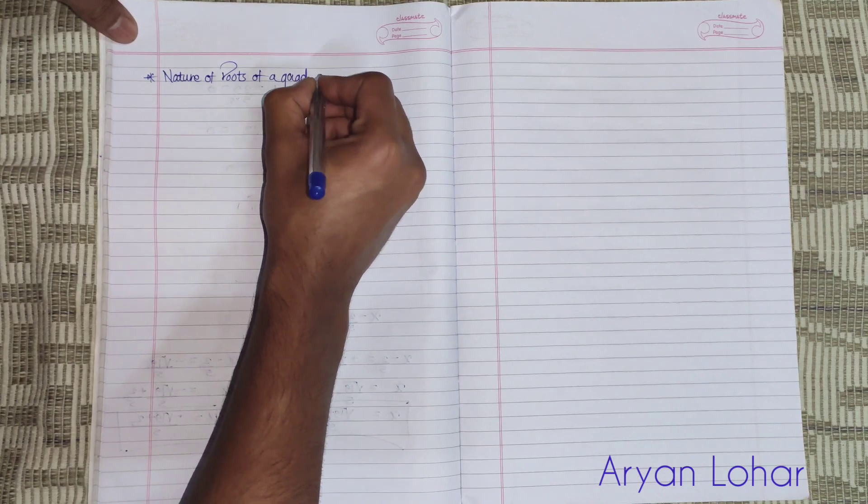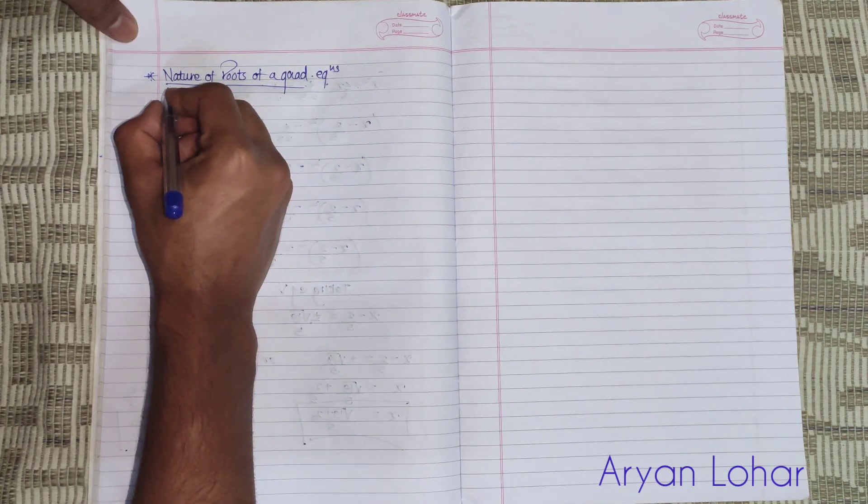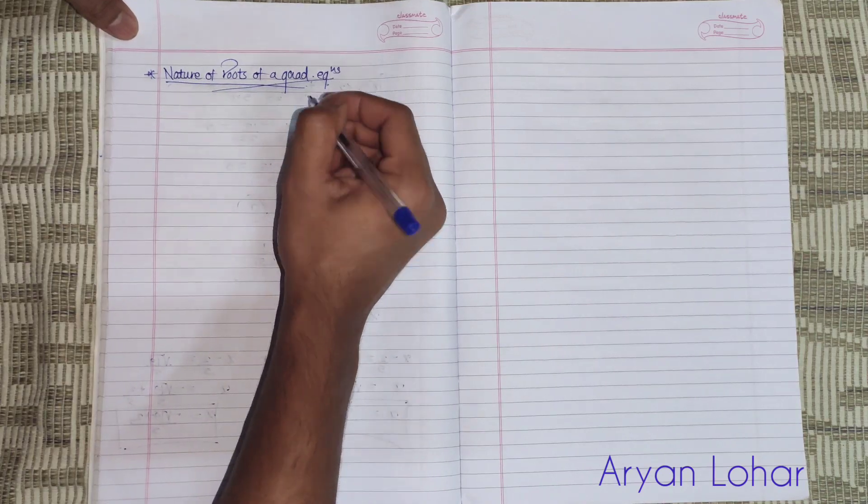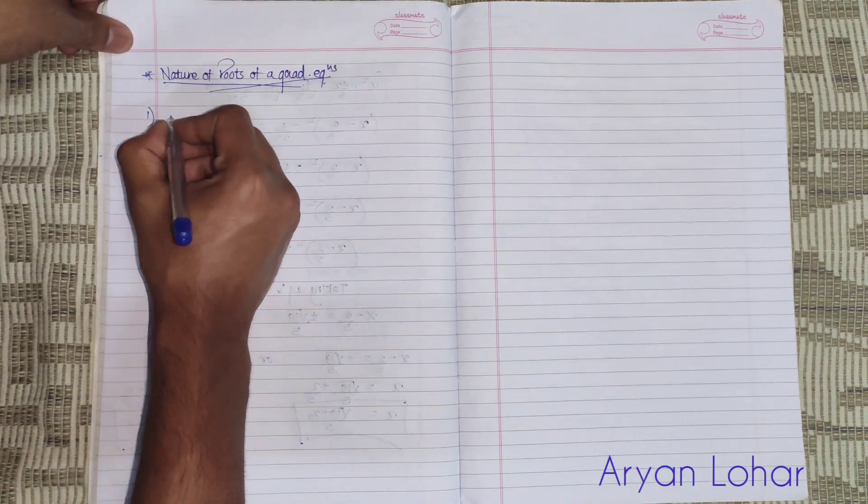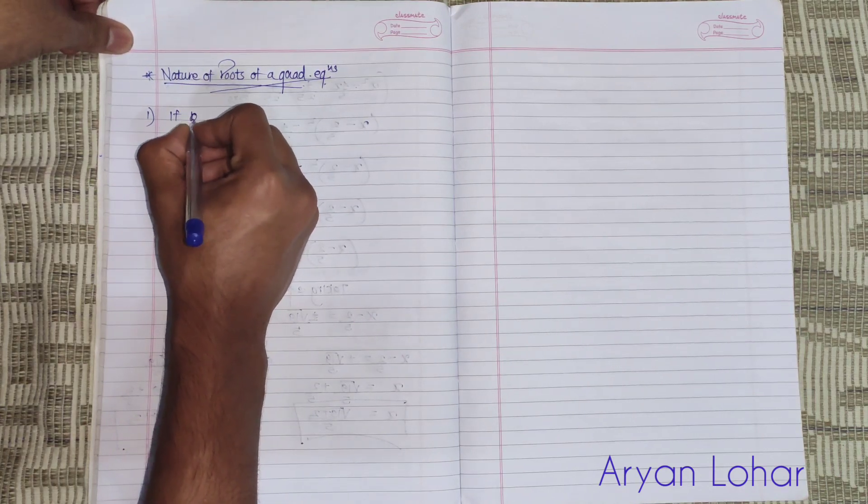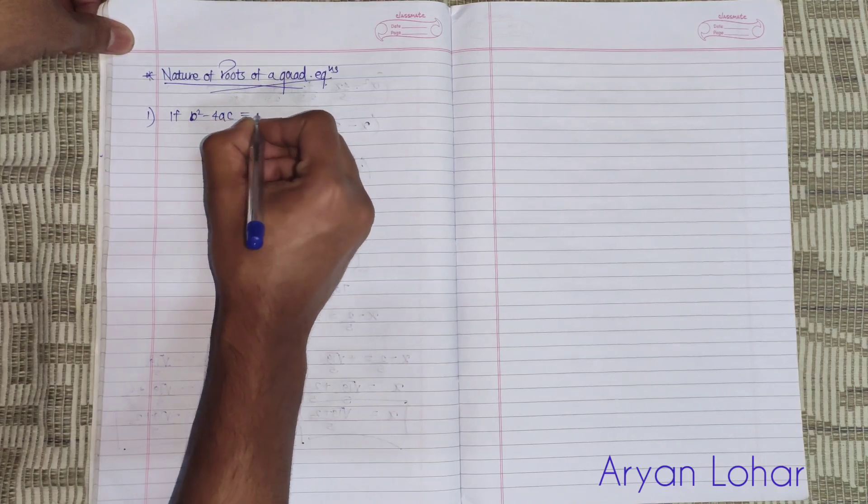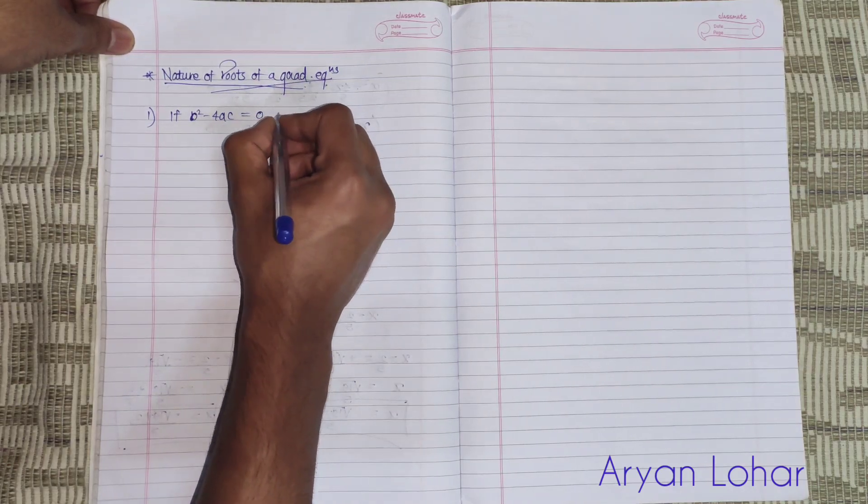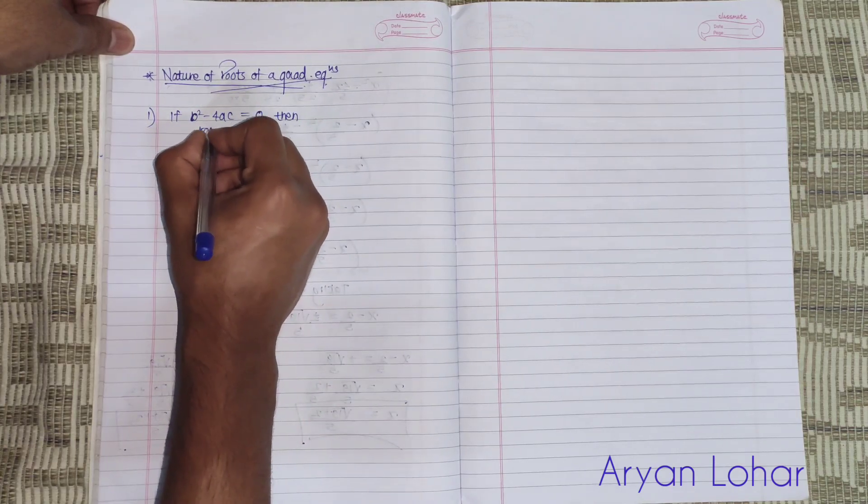There are three natures. First, if b squared minus 4AC is equals to 0, then roots...